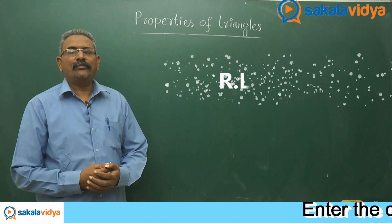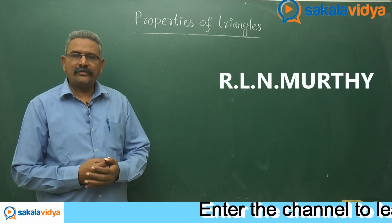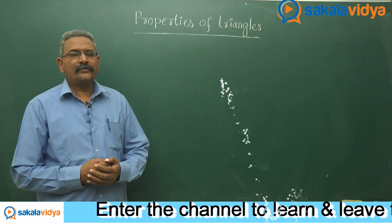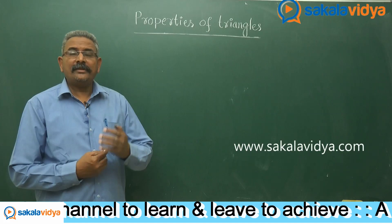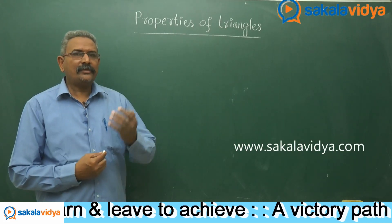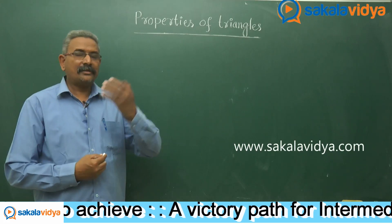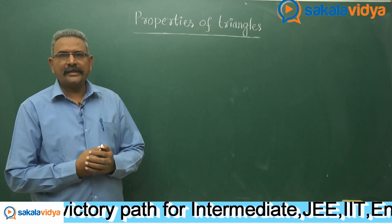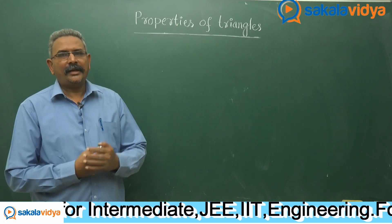Let us formulate one more formula — that is cot(a/2), cot(b/2), cot(c/2). So cot(a/2) also in terms of small a, small b, small c, and s. That means cot(a/2), cot(b/2), cot(c/2) — all these three formulae can be expressed in terms of small a, small b, small c, and s.